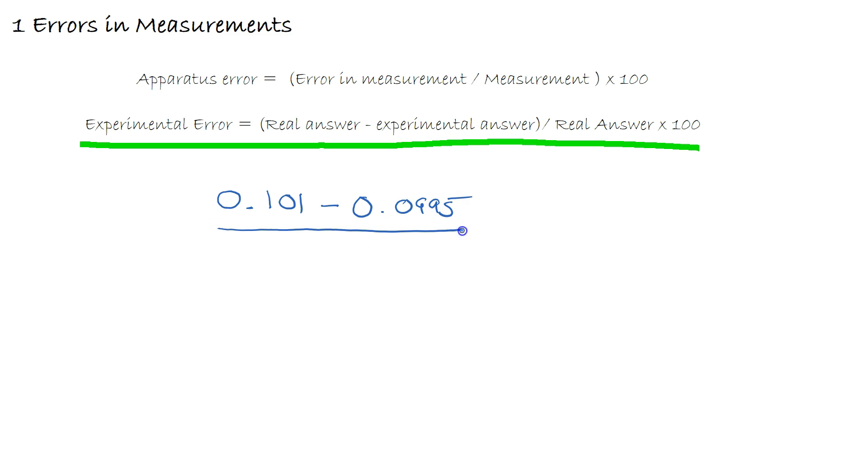We divide by the real answer, 0.101, make sure you put your parentheses around the top part of the equation, multiply it by 100, and we would end up with a percentage experimental error of 1.49%.